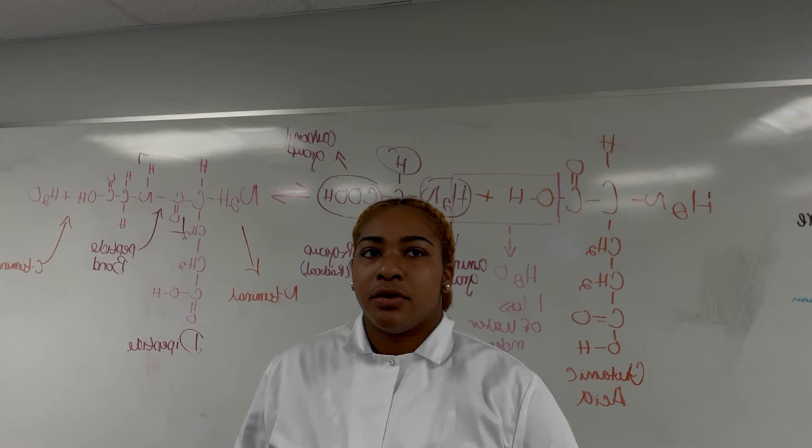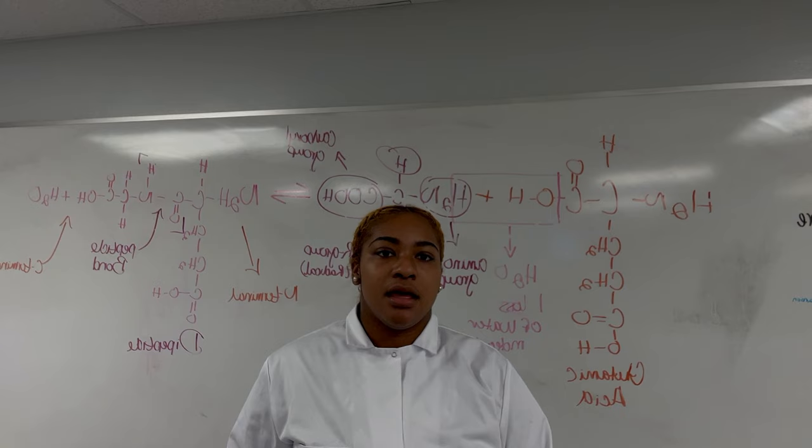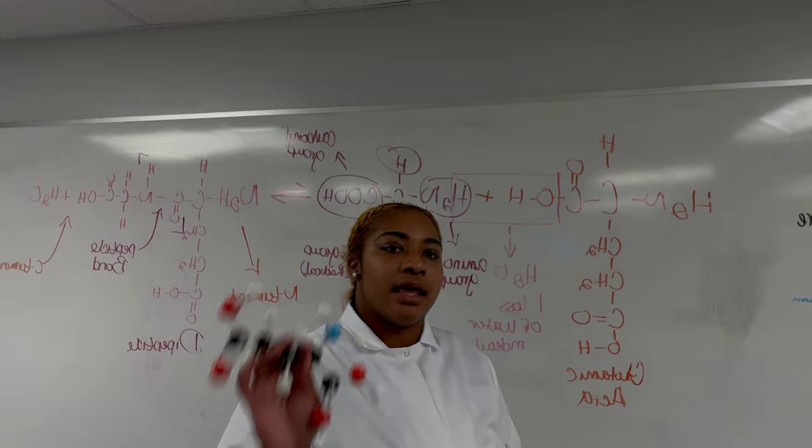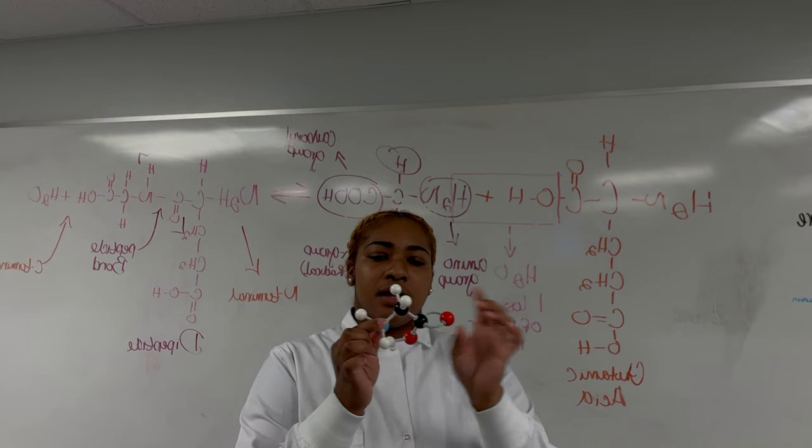In your R group or your radical group, that's the unique group on the amino acid because of the physical chemical characteristics such as basic, acidic, polar, and non-polar. Now I'm going to show you two different molecules which are glycine and glutamic acid.